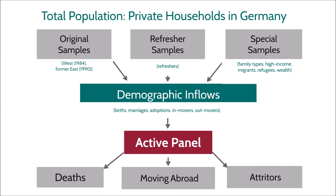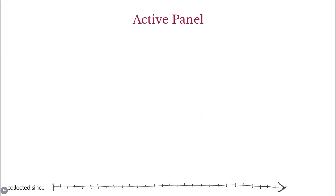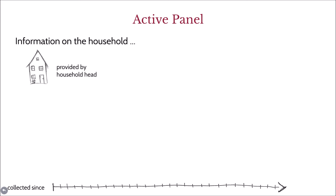For each sampled household, the SUP provides information on the household and the individual level. The household questionnaire, which covers all information on the household level, is completed by the household head — typically the person who feels most qualified to provide this information. Once a household head has been chosen, interviewers try to achieve continuity by having the same respondent provide the household level information every year.